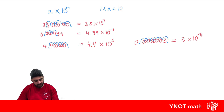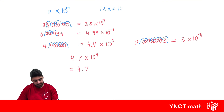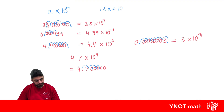What about going the other way — when we have a number in scientific notation and want to write it in expanded form? Take 4.7 times 10 to the 4. Because we have a positive power we know we're getting a big number. We write 4.7 with some zeros after it and move the decimal place four times to the right: 1, 2, 3, 4 — and we end up with 47,000.